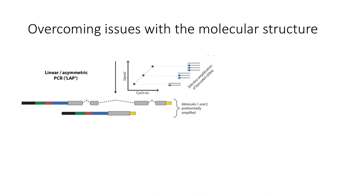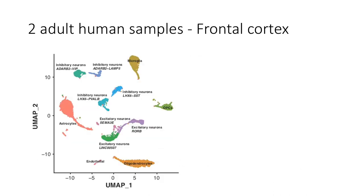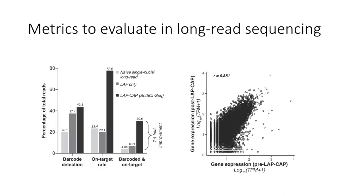So how do we get around it? We developed a technique called SnISOr-Seq, single nuclei isoform RNA sequencing, where we employ LAPCAP. LAPCAP is linear asymmetric PCR which enriches for barcoded molecules followed by exome capture which enriches for exonic molecules. And we applied it to two adult human cortical samples and we found that there is actually a 7.5 fold improvement in our barcoded and on-target rate without any loss of real information.